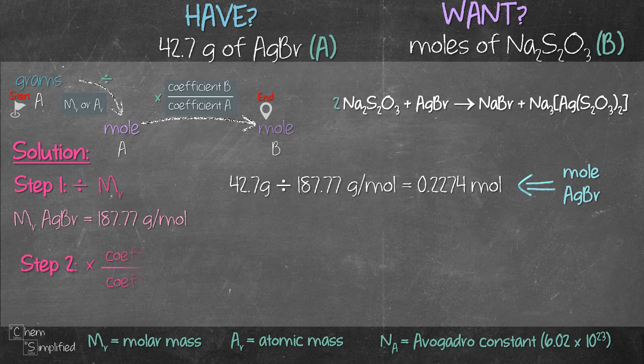Moving on to step two, we are supposed to multiply what we got from step one with the coefficient ratio. From the balanced equation, coefficient B is the number in front of Na2S2O3, which is 2.